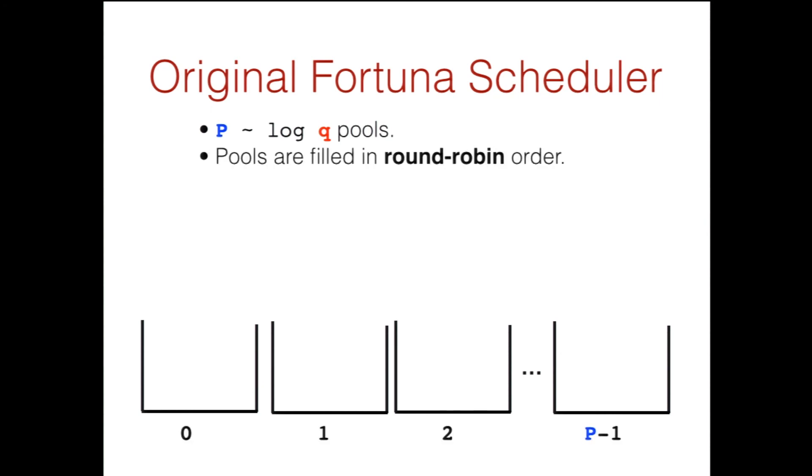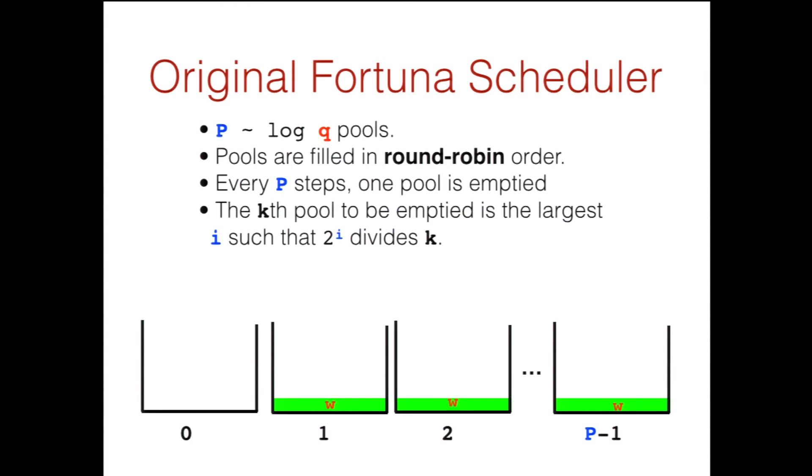So with this, I can show you the original Fortuna scheduler, which only works in the constant rate case. So this is the case when all weights are the same. It starts out with roughly log Q pools. Remember, Q was the length of the sequence. So we can number these pools 0 through P minus 1. And the pools are filled in a round-robin order. So first we fill pool 0, then we fill pool 1, then we fill pool 2, etc., all the way up to pool P minus 1. And every P steps, we're going to empty one pool. So for example, after the first round, we will empty pool 0. More generally, the kth pool to be emptied will be the largest i such that 2 to the i divides k. Now if that's a bit opaque, this simply means that the first pool will be emptied every two rounds, the next pool every 4, then every 8, etc., powers of 2 all the way up to 2 to the P. And you might notice that 2 to the P is roughly Q. This is not an accident.